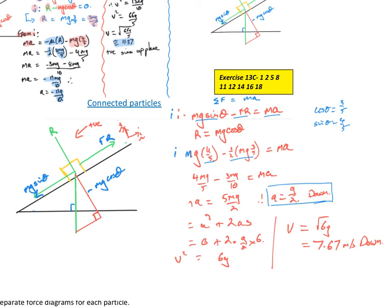We can make down the plane positive. In terms of kinematics and conditions: starting from rest, so u equals 0; a equals g on 2; final velocity is unknown; and the distance is 6 metres again because we're getting back to our starting point. So v squared equals u squared plus 2as, giving v squared equals 2 times g on 2 times 6, so v squared equals 6g. The square root of 6g is 7.67 metres per second, negative, down the plane — as long as you identify the direction of motion.